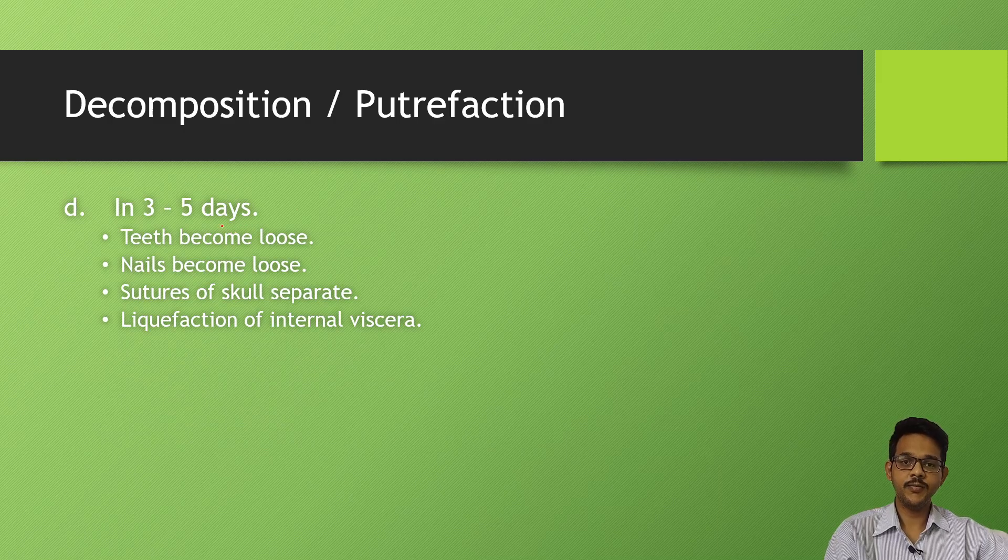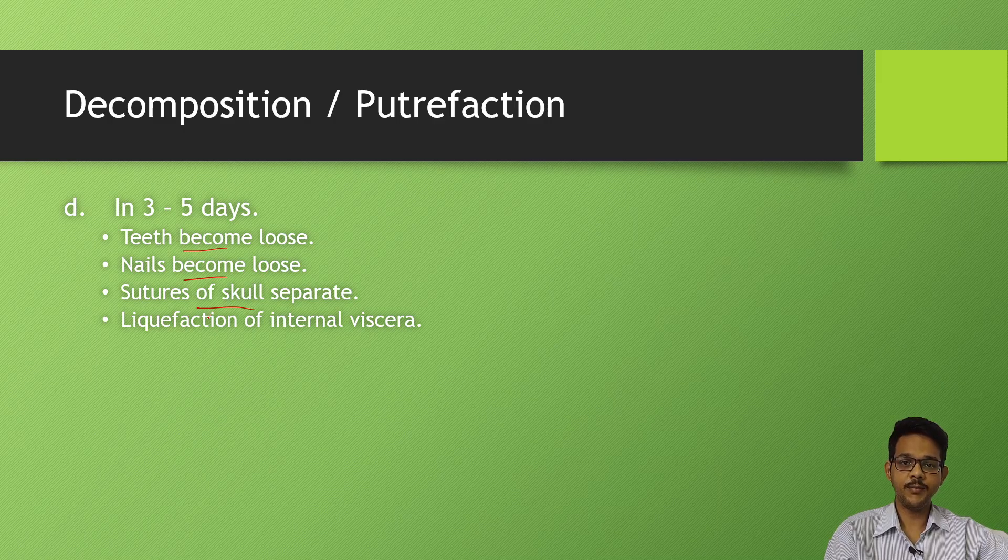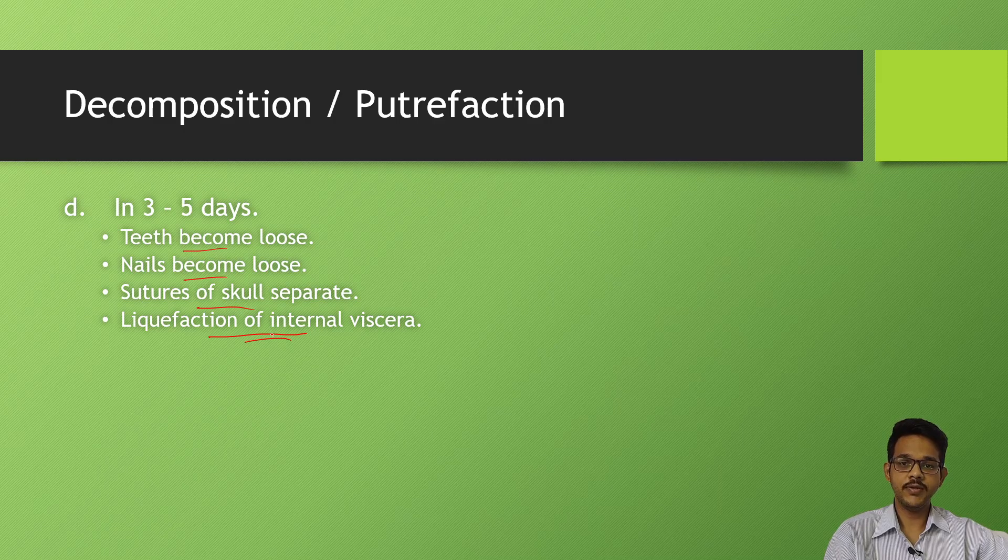In three to five days of putrefaction, teeth become loose, nails become loose and fall off, sutures of the skull get separated and the brain starts liquefaction. Then liquefaction of internal organs - first it starts in the brain, then later on the liquefaction of the lungs starts to appear.